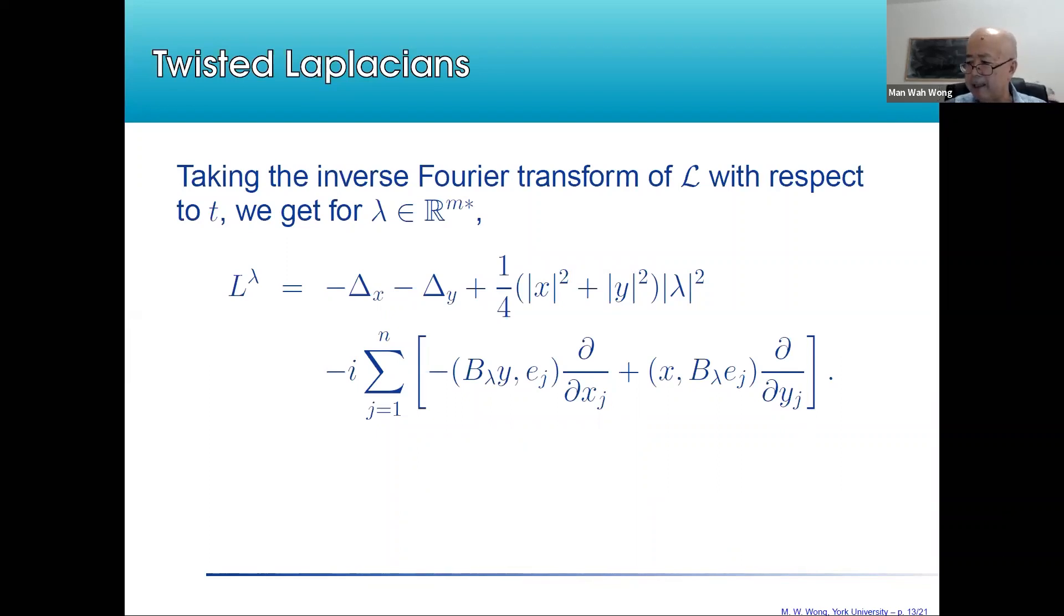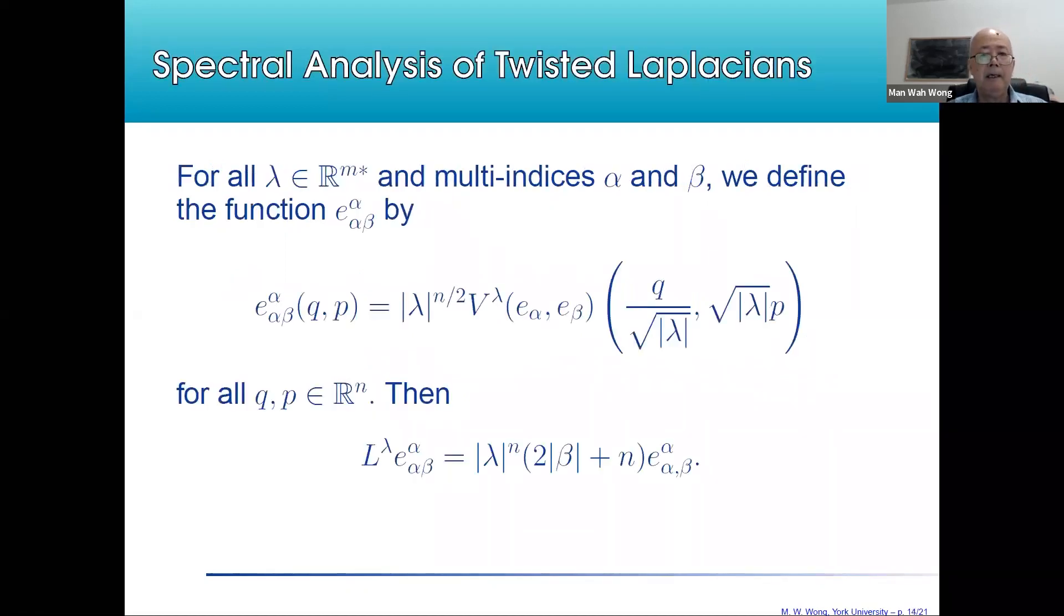One thing about the sub-Laplacian is that it's sub-elliptic, which is not elliptic. It's certainly hypoelliptic due to a result of Hörmander. I am going to convert this sub-Laplacian to a family of elliptic operators on R^{2N}. We simply take the inverse Fourier transform of the sub-Laplacian with respect to the center, and we end up with L lambda, which is an elliptic operator.